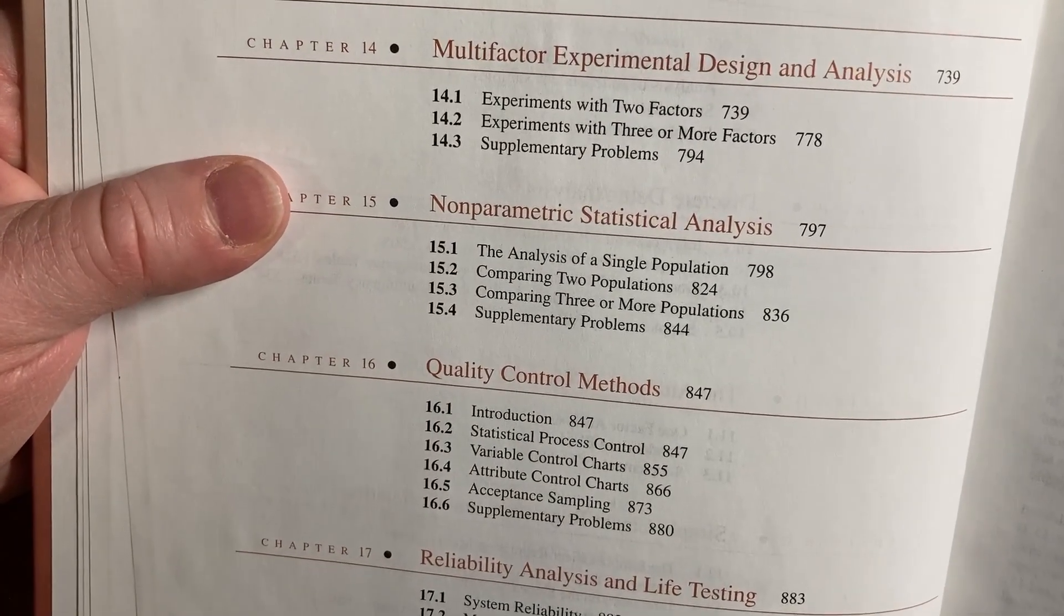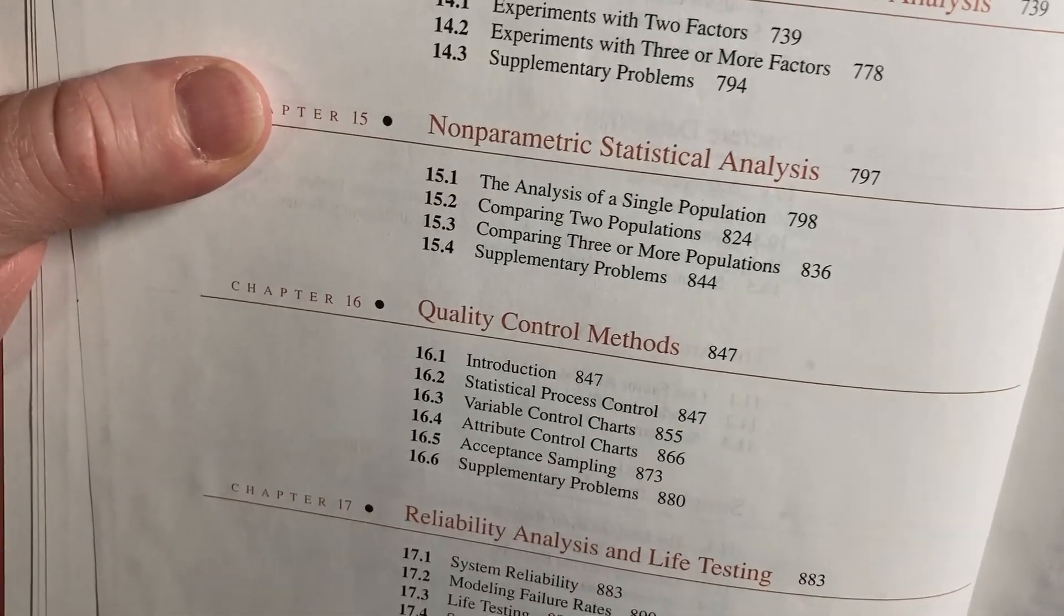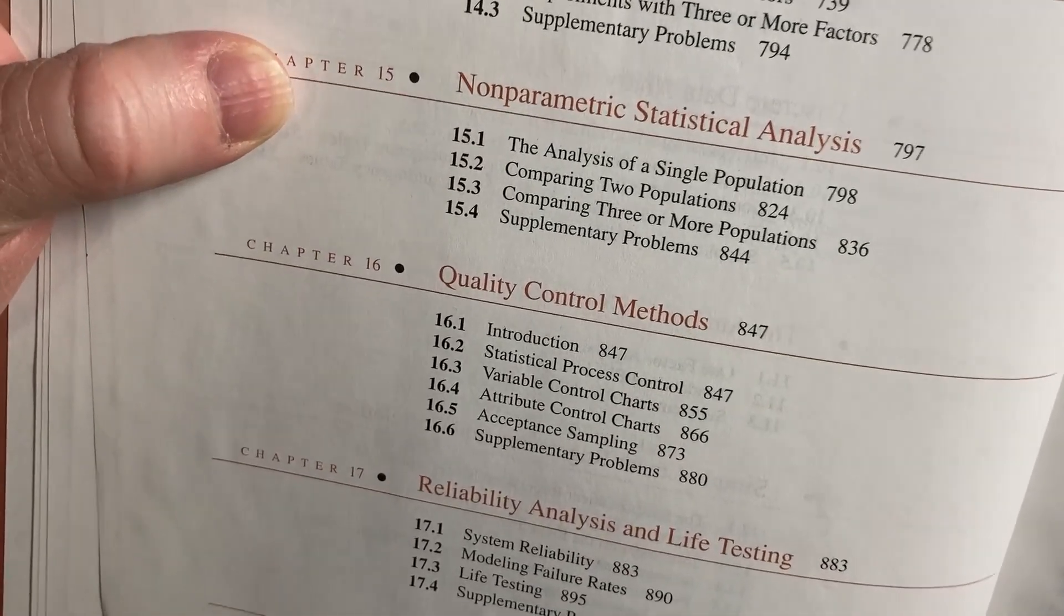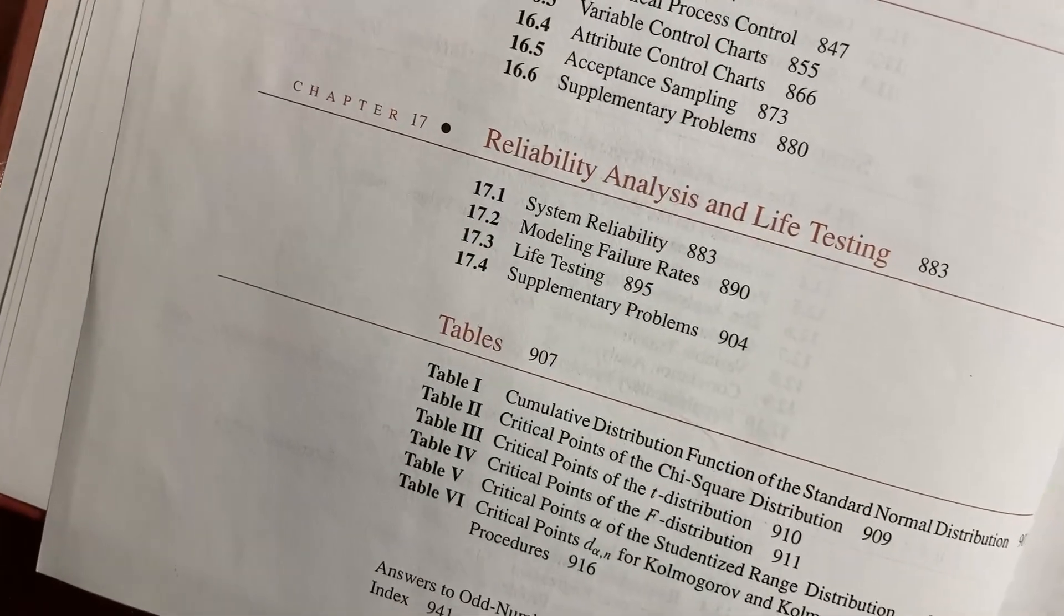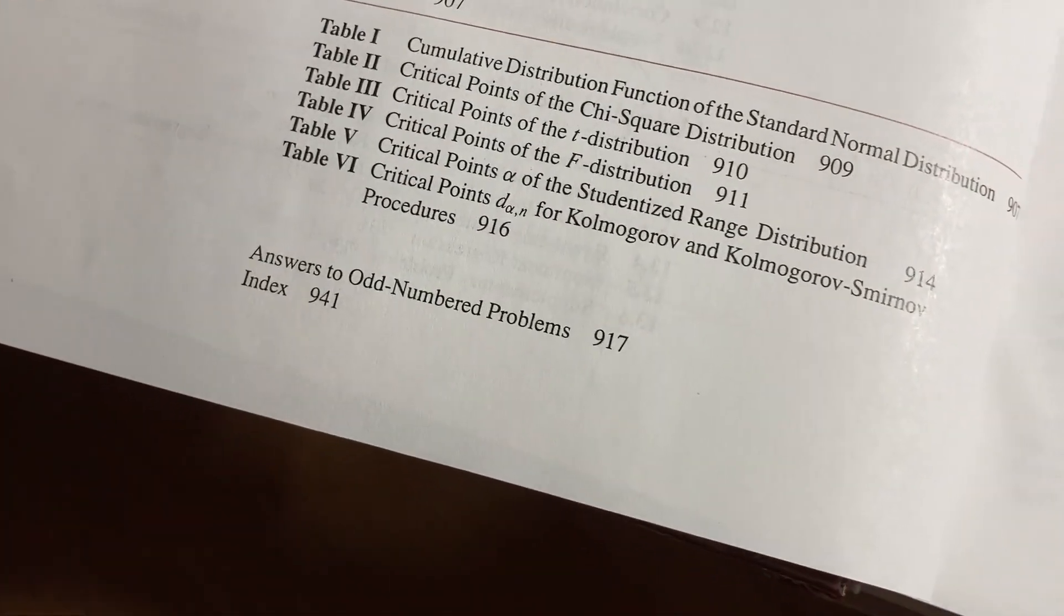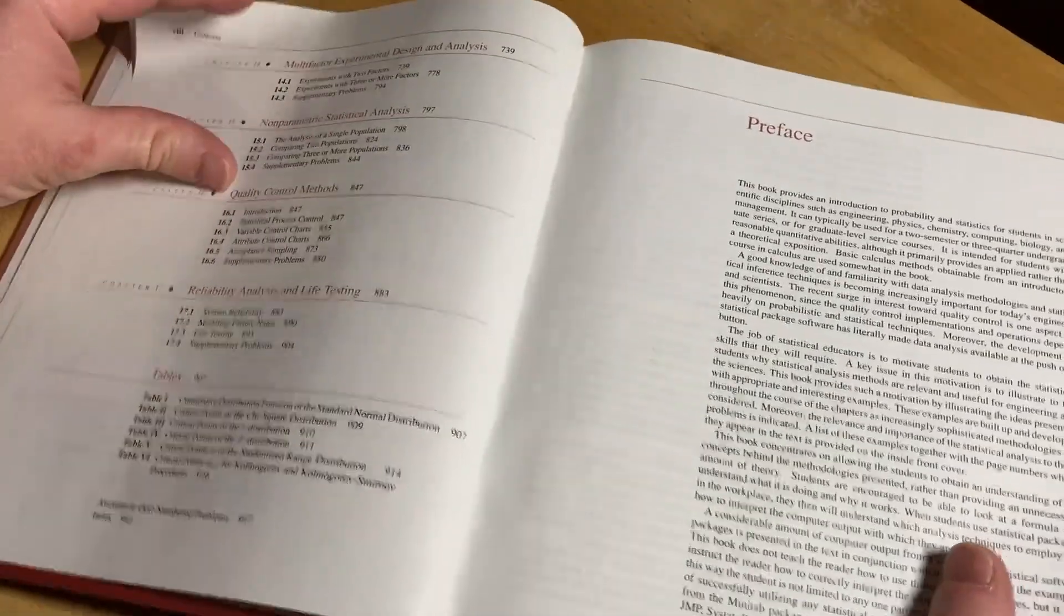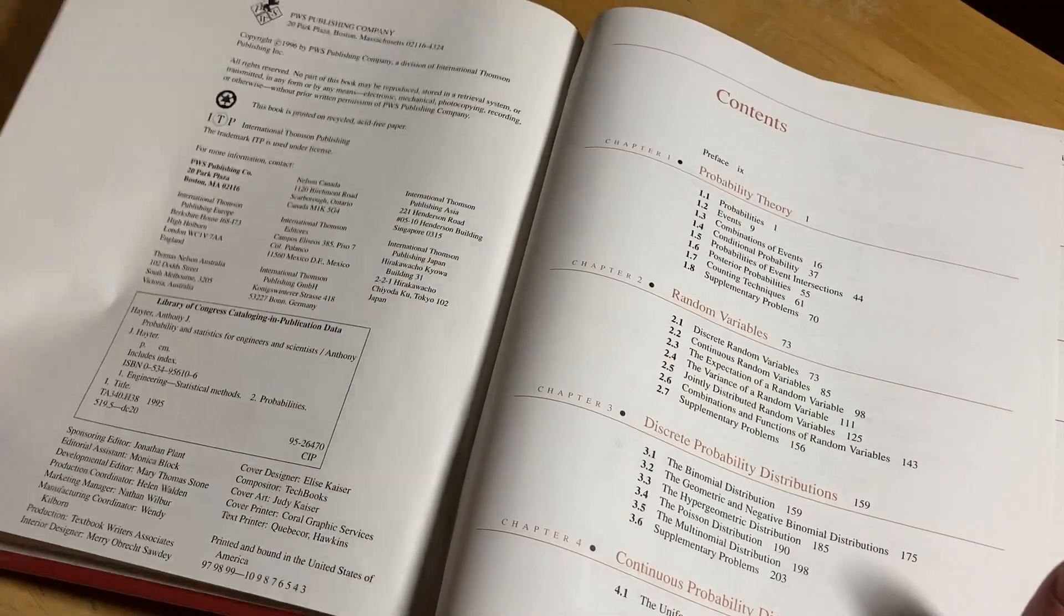I have seen most of these things, not all of them. Multi-factor experimental design and analysis, non-parametric statistical analysis, quality control methods, reliability analysis and life testing. Then we have some tables and answers to the odd number problems in the back of the book, which is super helpful if you're doing any type of self-study.